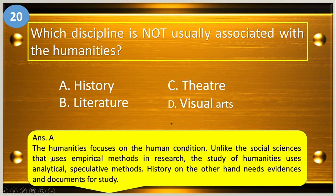The humanities focuses on the human condition. Unlike the social sciences that uses empirical methods in research, the study of humanities uses analytical and speculative methods. History, on the other hand, needs evidences and documents for study.